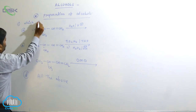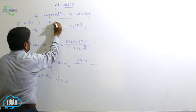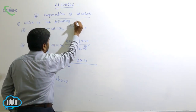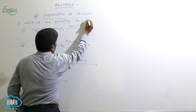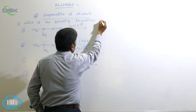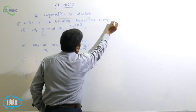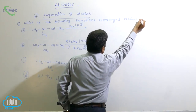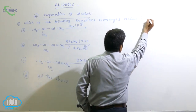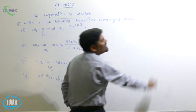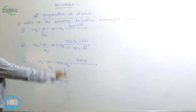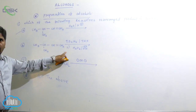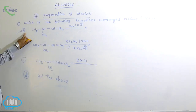Which of the following reactions gives a rearranged product? The answer is the first one — option A is correct. Because in reaction A, rearrangement is possible, whereas in reactions B and C (hydroboration-oxidation and OMD), no rearrangement occurs.